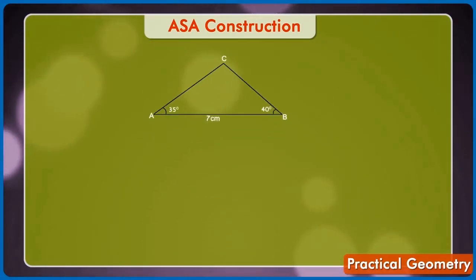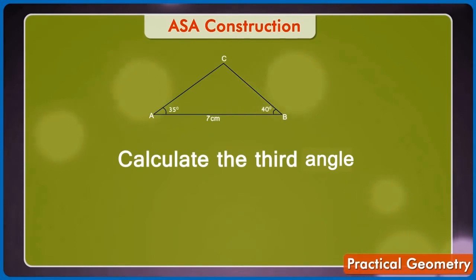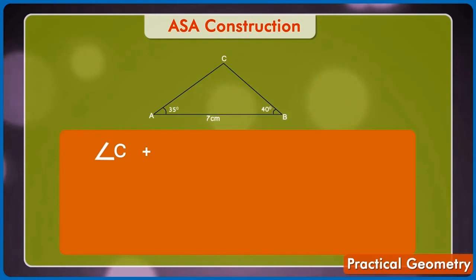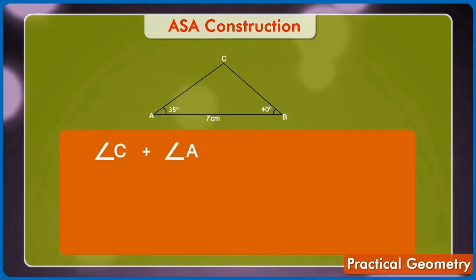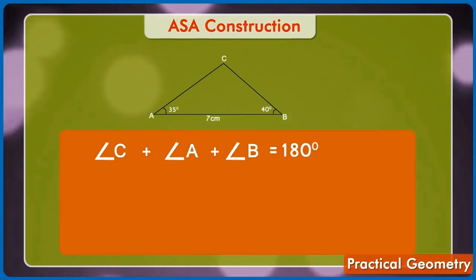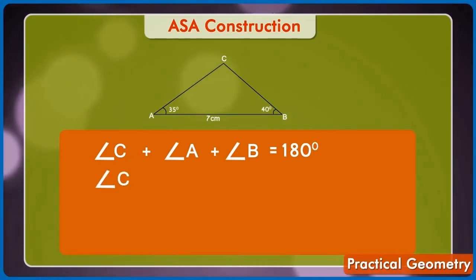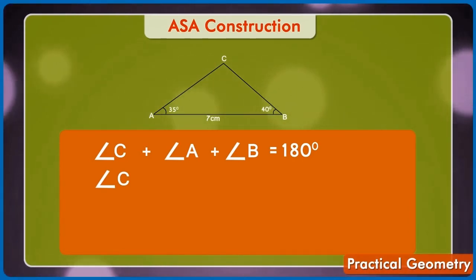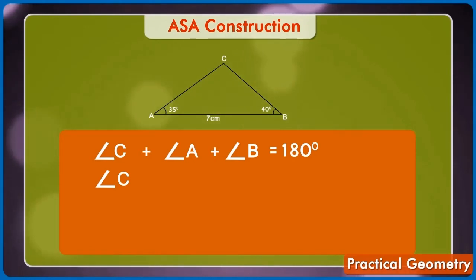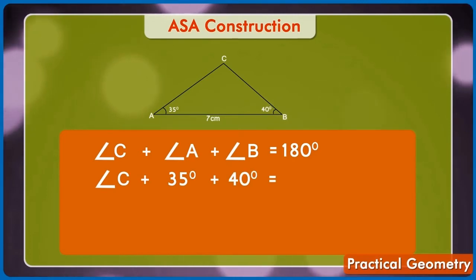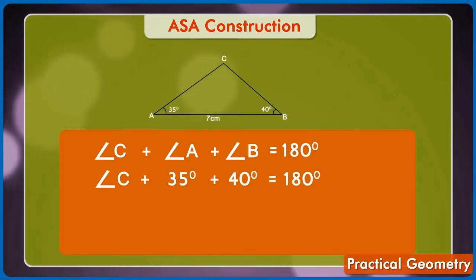Now, we can calculate the third angle. As we know that angle C plus angle A plus angle B equals to 180 degrees. Now, after putting the value of angle A and angle B, we have angle C plus 35 degrees plus 40 degrees equals to 180 degrees. Or angle C equals to 105 degrees.